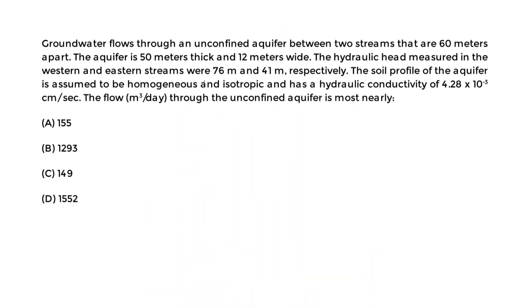Another groundwater example, still using Darcy's Law. We're told groundwater flows through an unconfined aquifer between two streams that are 60 meters apart. The aquifer is 50 meters thick and 12 meters wide. The hydraulic head measured in the western and eastern streams were 76 meters and 41 meters respectively. The hydraulic conductivity is 4.28 x 10⁻³ cm per second. Find the flow in cubic meters per day through the unconfined aquifer.